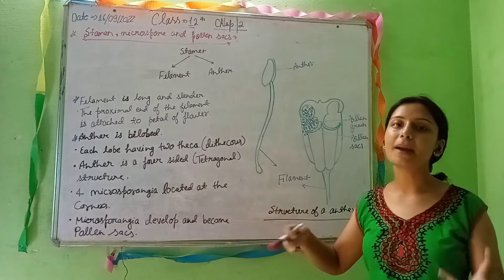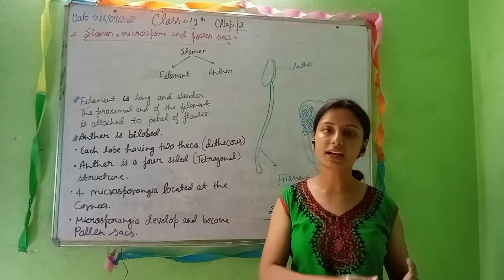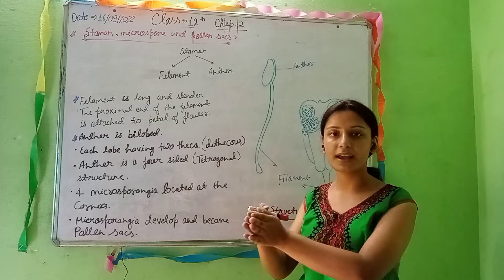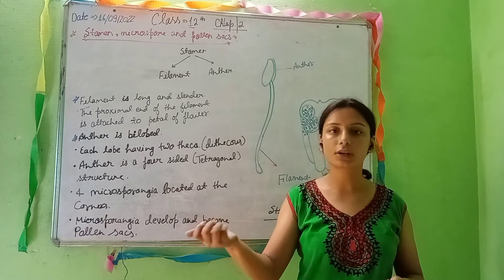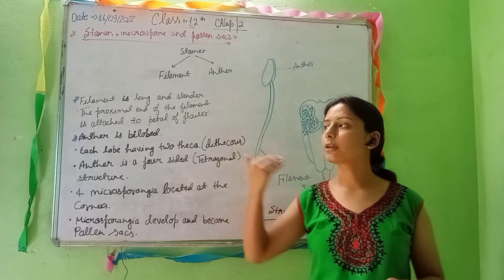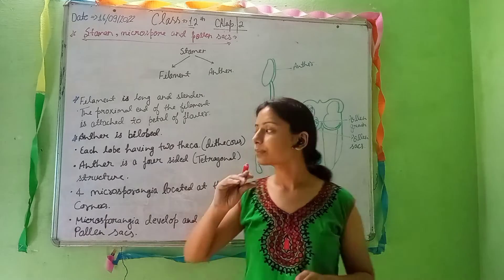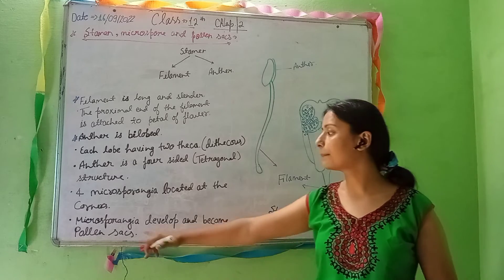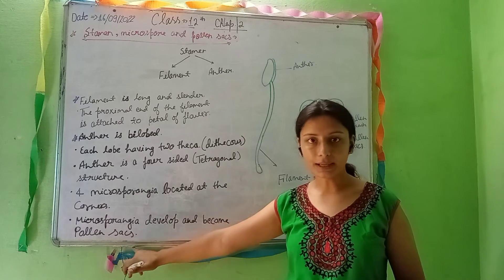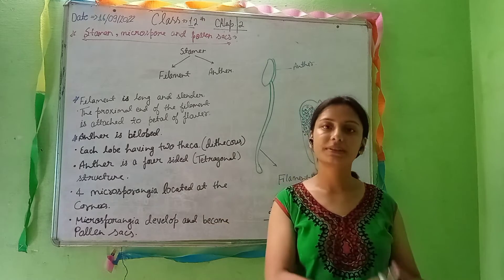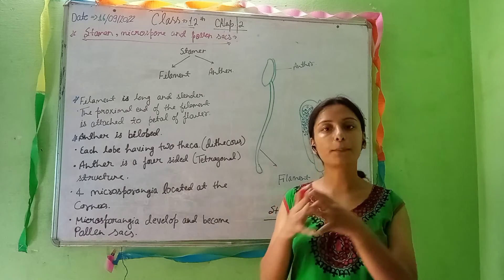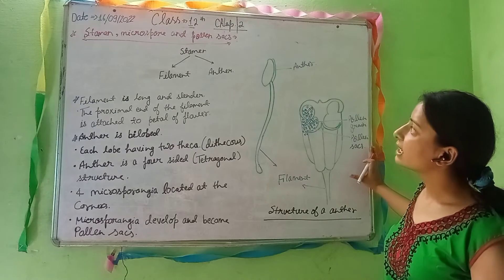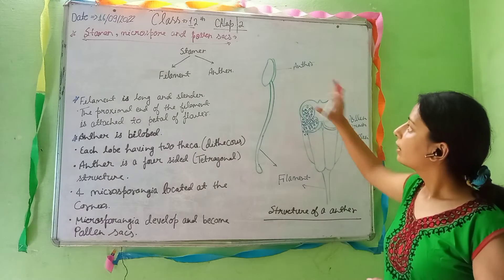The microsporangia develop and are also called pollen sacs. As the flower reaches maturity, the pollen grains dry and are released. At the maturity stage, microsporangia are referred to as pollen sacs, and microspores mature into pollen grains.